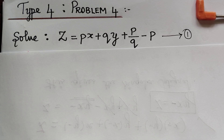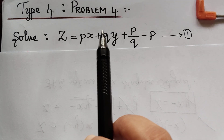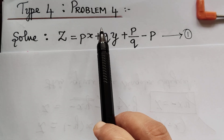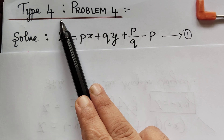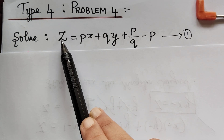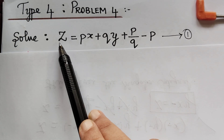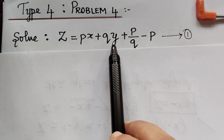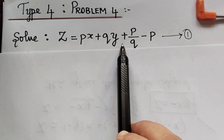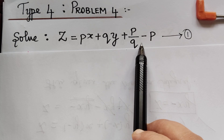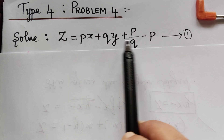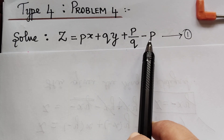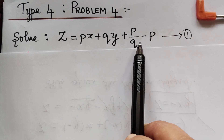Dear students, under the topic of non-linear partial differential equations, we are solving problems under type 4. The given equation is z equal to px plus qy plus p by q minus p. We observe that the given equation is of the Clairaut's form.